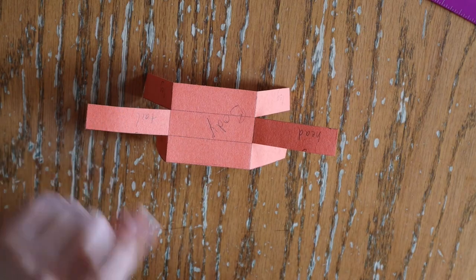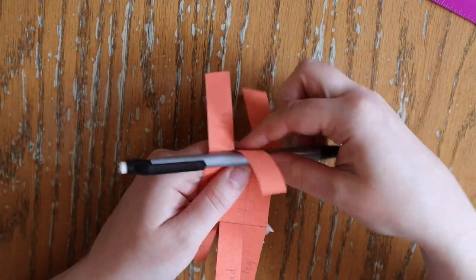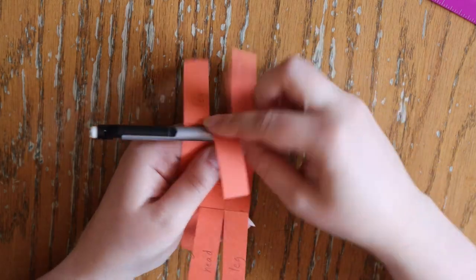You can also curl your tail for improved balance. To achieve this, I'm using my pencil and running it along the tail in a curved motion.